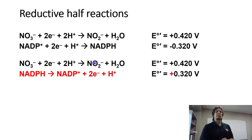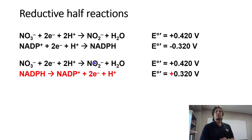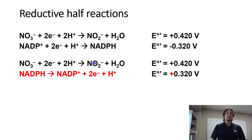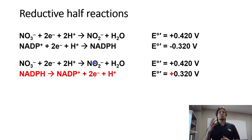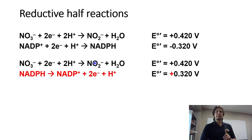The top reaction remains as shown at 0.420 volts. For the second half reaction, we flip the products and reactants: NADPH is now on the reactant side, being converted to NADP+ with two electrons and a proton released. Importantly, the sign of the reduction potential for that second reaction has been flipped from negative to positive.